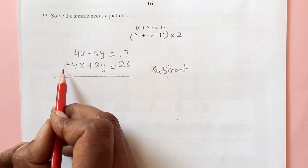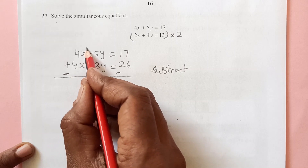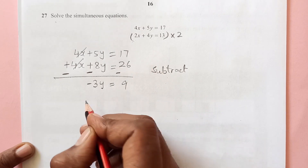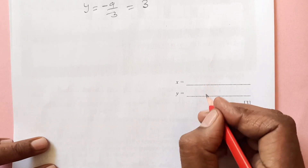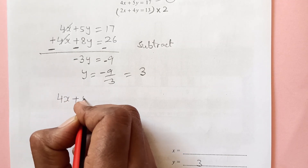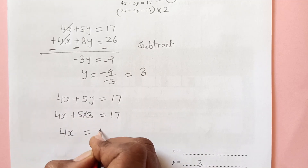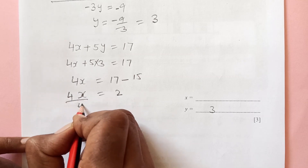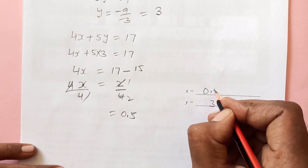When you have the same sign, you subtract. Change the signs of the lower equation: 4x minus 4x cancels, and 5y minus 8y gives negative 3y equals 26 minus 17, which is 9. So y equals negative 9 over negative 3, which is 3. Substituting back: 4x plus 5 times 3 equals 17, so 4x equals 17 minus 15 equals 2, giving x equals 0.5.